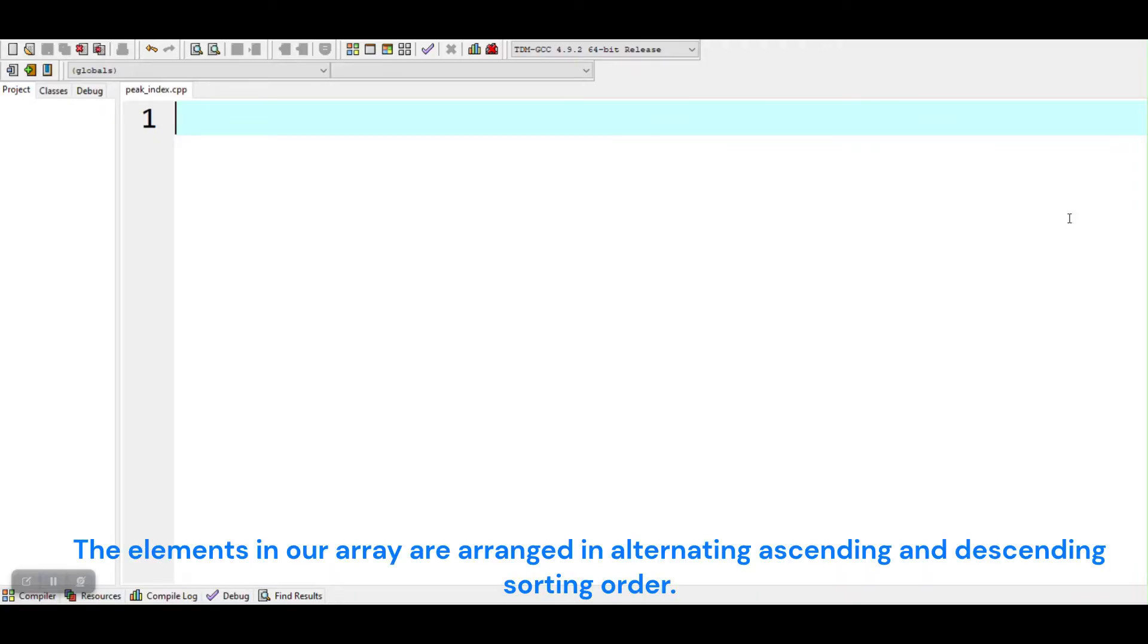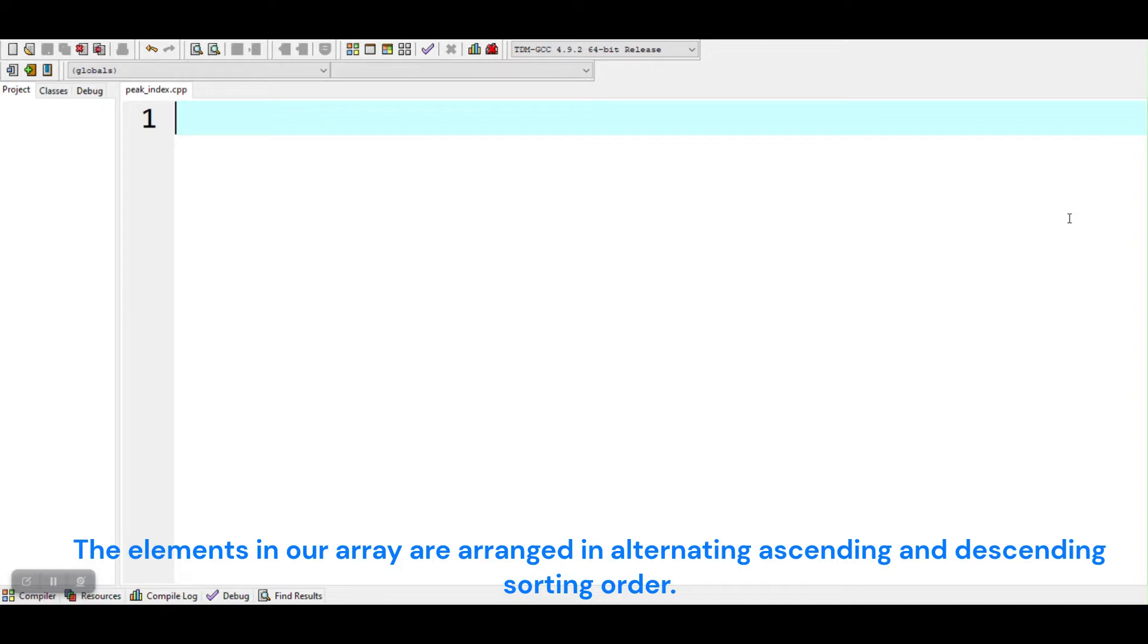The elements in our array are arranged in alternating ascending and descending sorting order. So we will modify our binary search program to find out the peak element in the array.